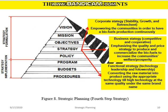Strategy — Number 1: corporate strategy, divided by stability, growth, and retrenchment — empowering the communities to have biofuel production continuously. Number 2: business strategy (competitive and cooperative) — maximizing quality and price strategy to produce and commercialize biofuel to increase community welfare and prosperity. Number 3: functional strategy (technology leadership and followership) — converting raw material into product using appropriate to high technology at the same quality under the same brand name.